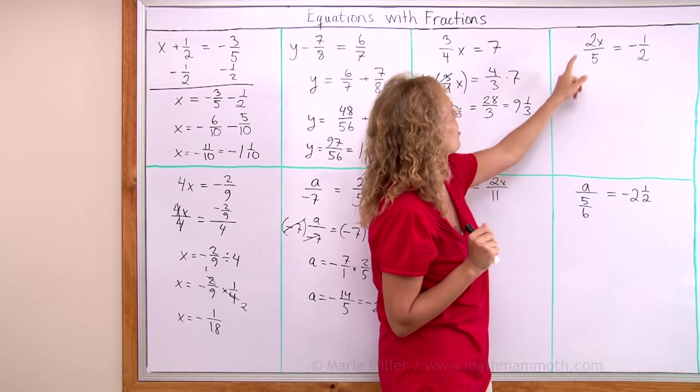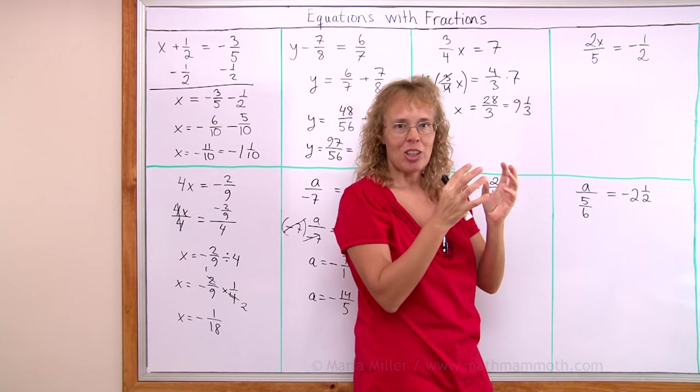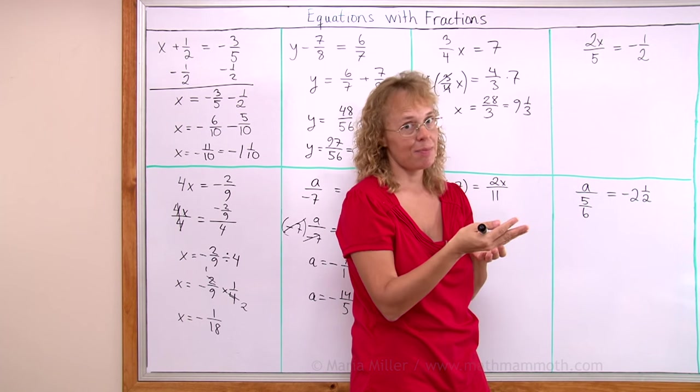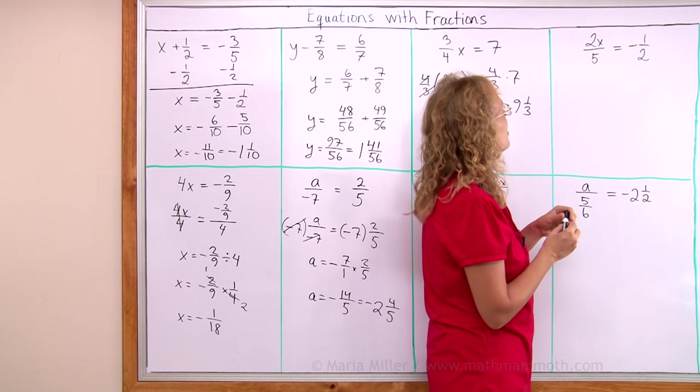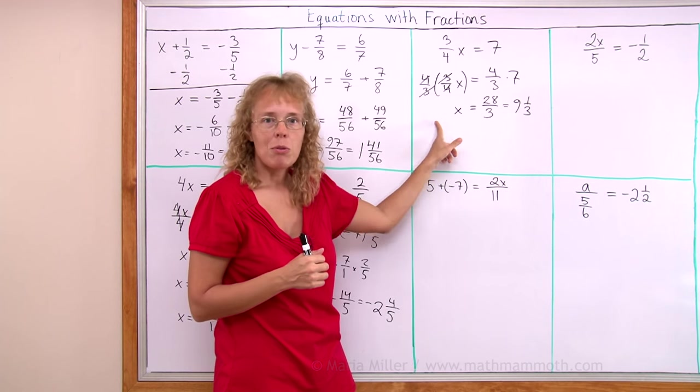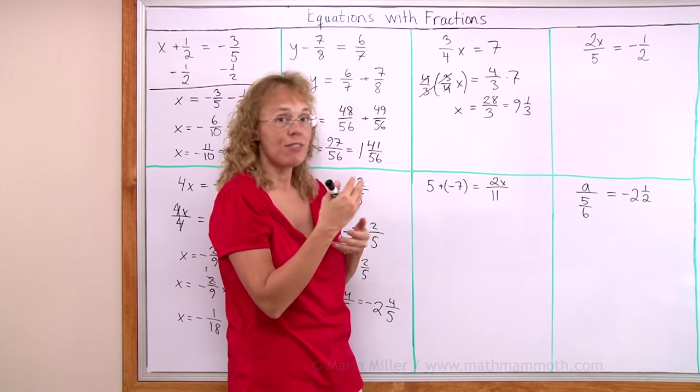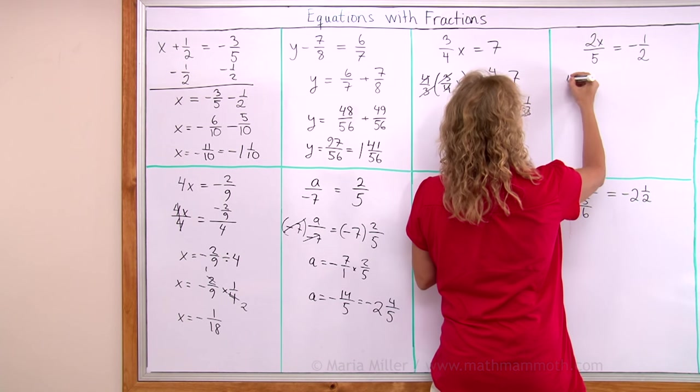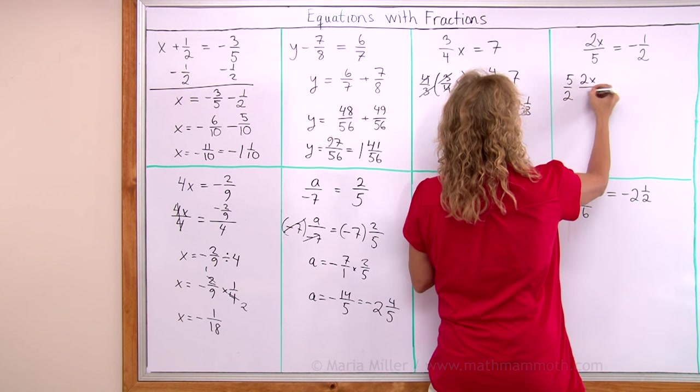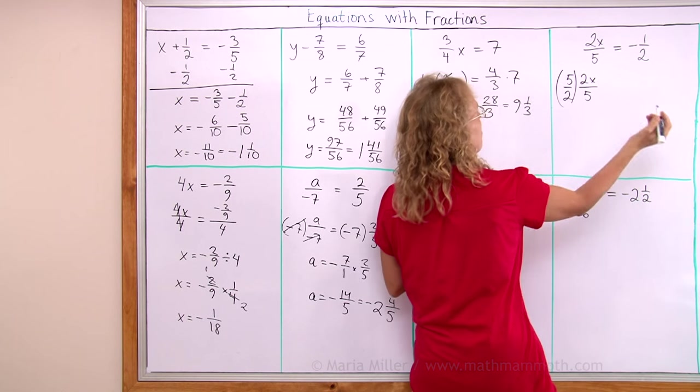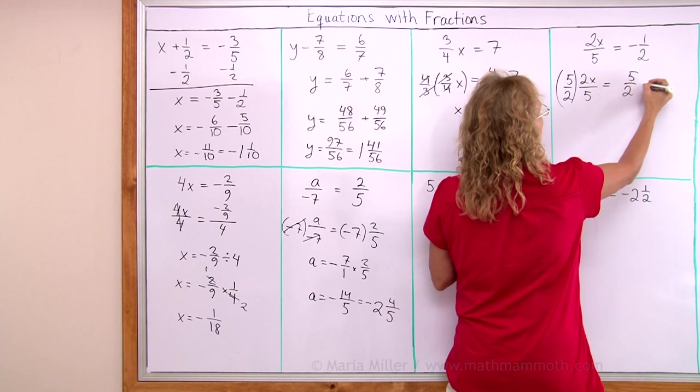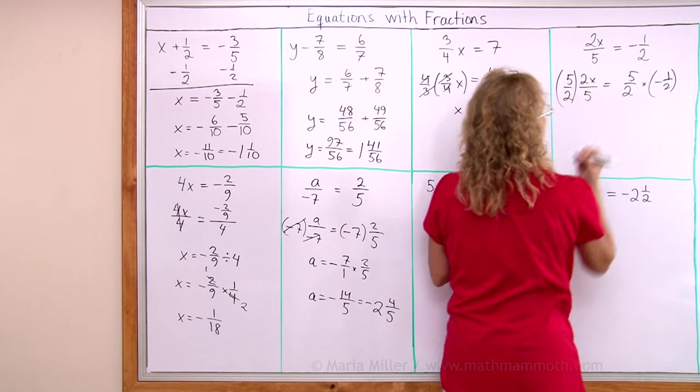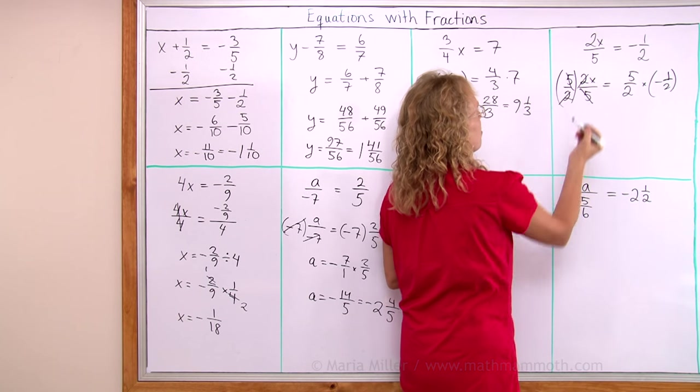It looks a little bit different because the 2 and x are together on top of the line, but this is the same exact equation as 2 fifths times x. Again we do the same as what we did before. We will multiply it by 5 over 2 so that the 2 and 5 both will cancel. So we multiply by 5 over 2 and then you have 2x over 5. Then here 5 over 2 times negative 1 half. Now here everything cancels except the x.